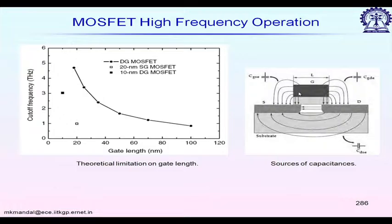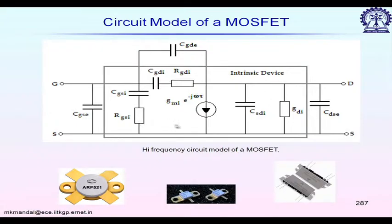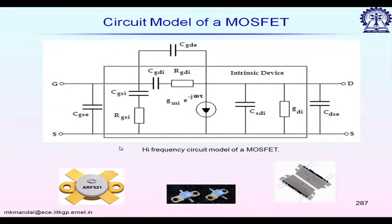There is also a capacitance C_GD between gate and drain, plus body effect. In the high-frequency equivalent circuit, capacitors C_GS and C_GD must be included. The intrinsic device properties are shown inside the rectangular box; extrinsic effects from packaging add further capacitors. Because of these capacitors, the device gain becomes a function of frequency, and the frequency at which the current gain falls to unity defines f_T.